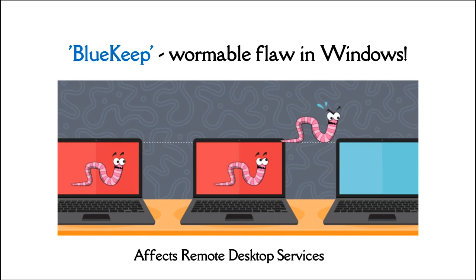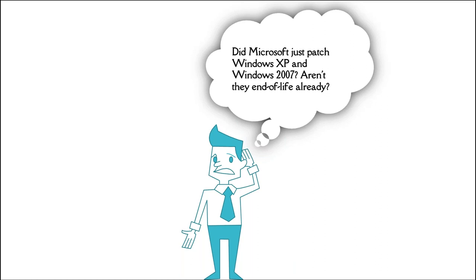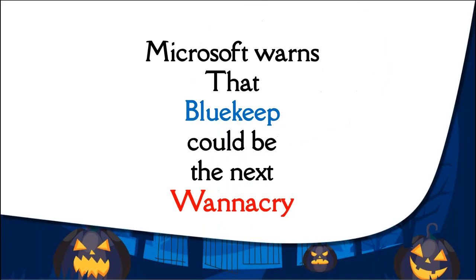BlueKeep is also called the next WannaCry. This year's main Patch Tuesday, Microsoft urged its users to patch a highly critical RDP flaw now known as BlueKeep. BlueKeep is basically a flaw in a Remote Desktop component that affects almost all versions of Windows, tracked as CVE-2019-0708. It is a wormable vulnerability because it can be weaponized by malware to propagate itself from one vulnerable computer to another automatically, without any victim interaction.